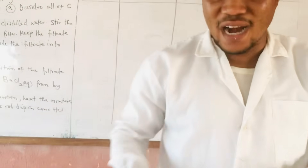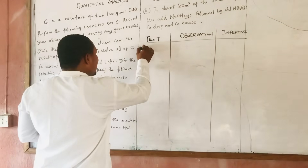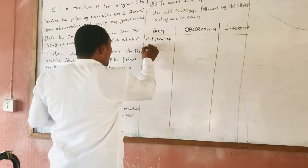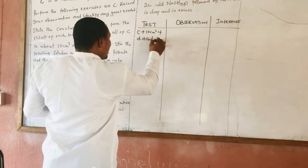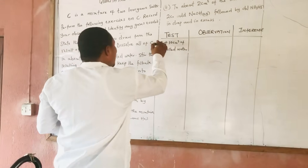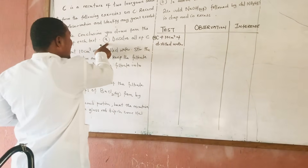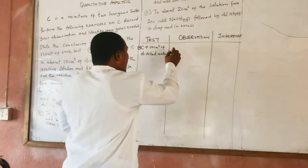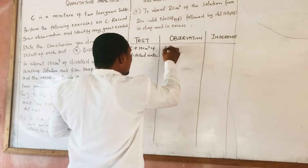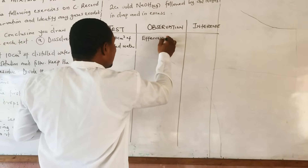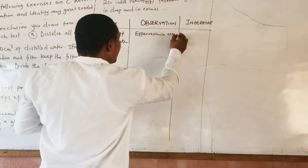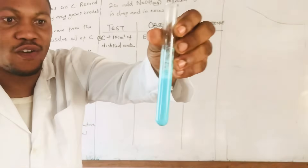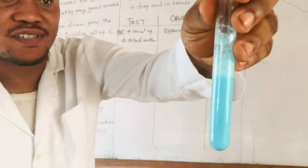So I can record that: C plus about 10 cm³ of distilled water. What is my observation? My observation number one: effervescence occurred. That is very obvious. Then they say: stir the resulting solution and filter.